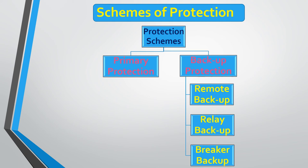Protection schemes are divided into two parts: primary protection and backup protection. Backup protection is further subdivided into three types: remote backup, relay backup, and breaker backup. Depending on the location or type of backup provided in the electrical power system, protection schemes are named accordingly.